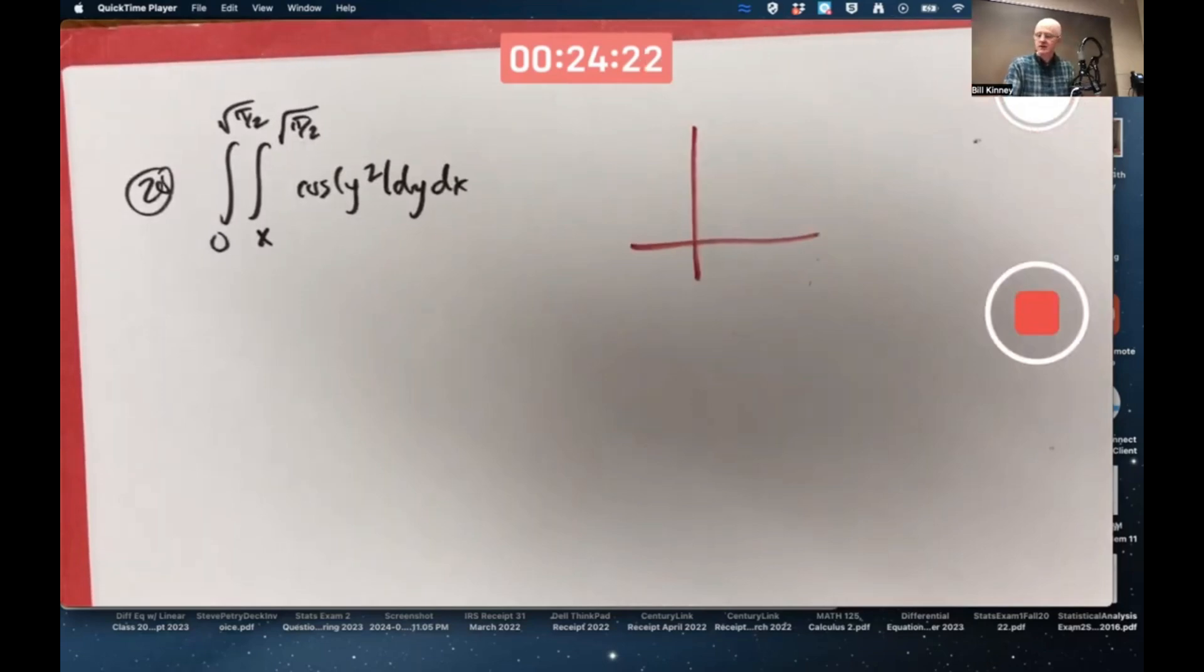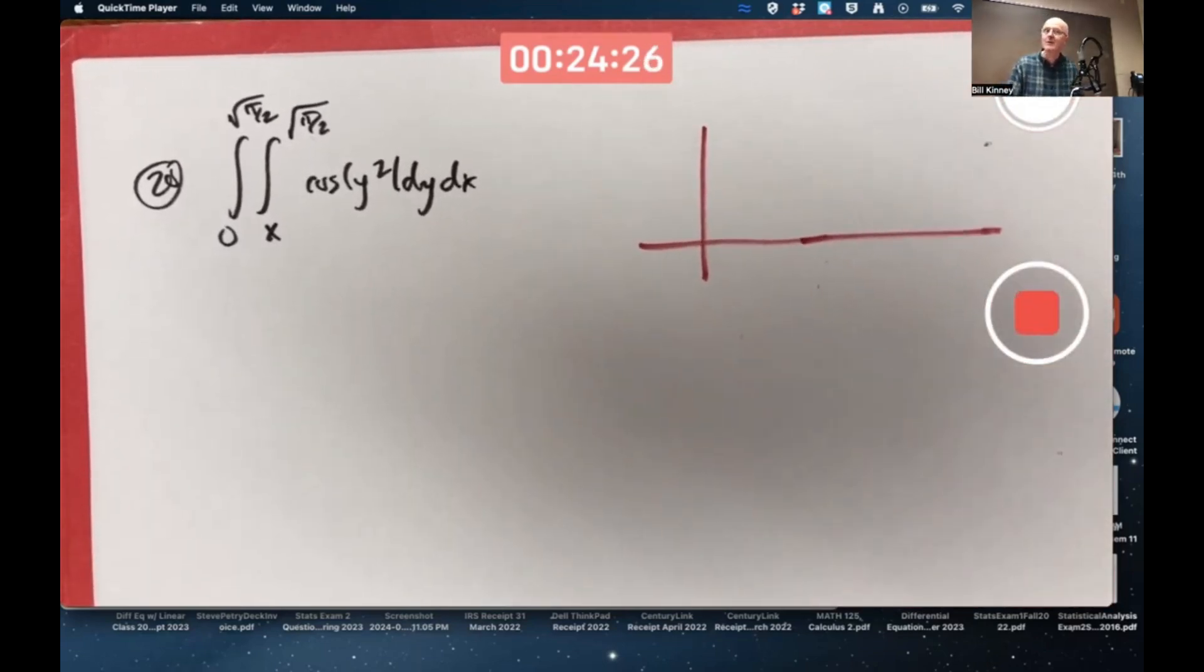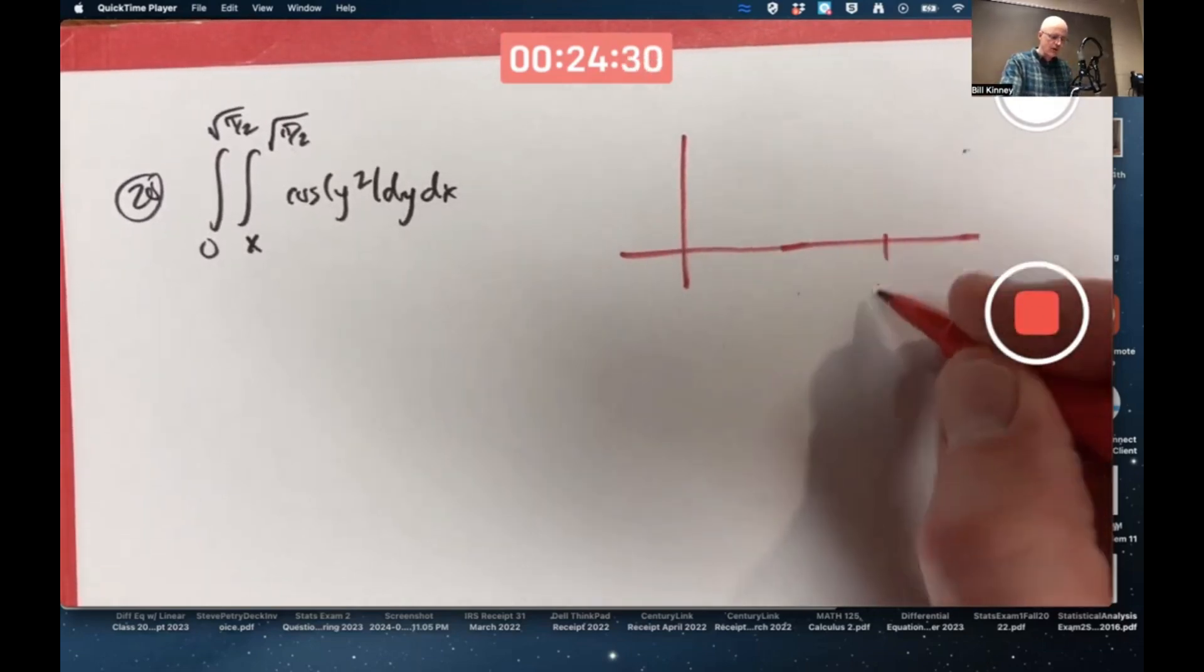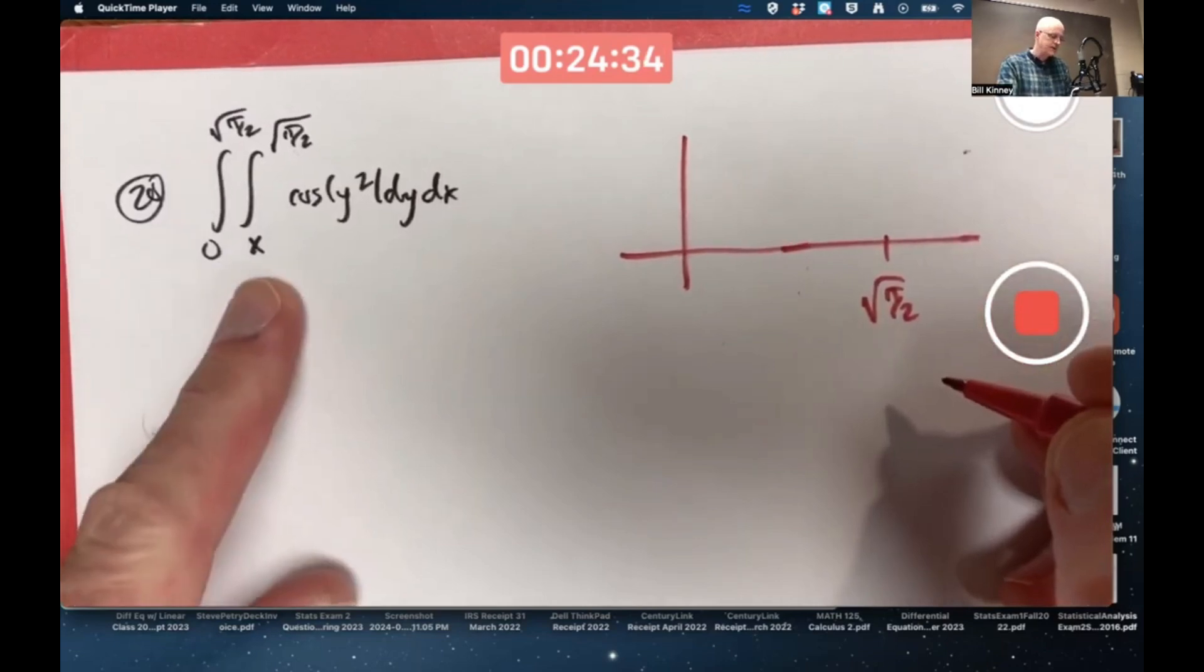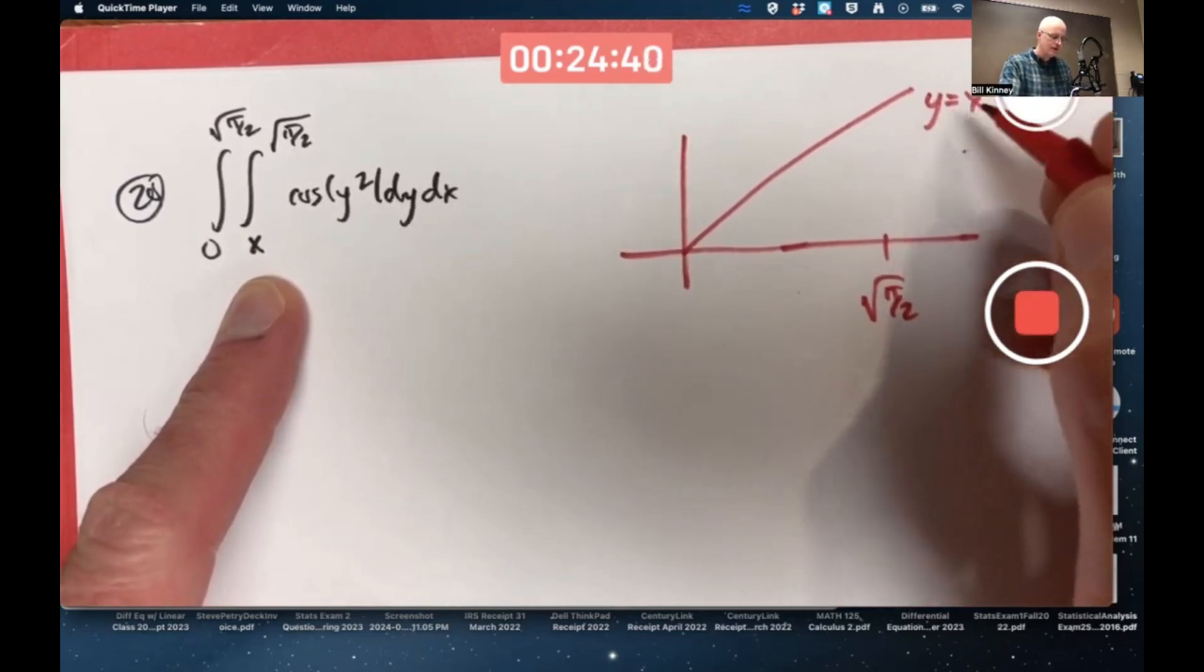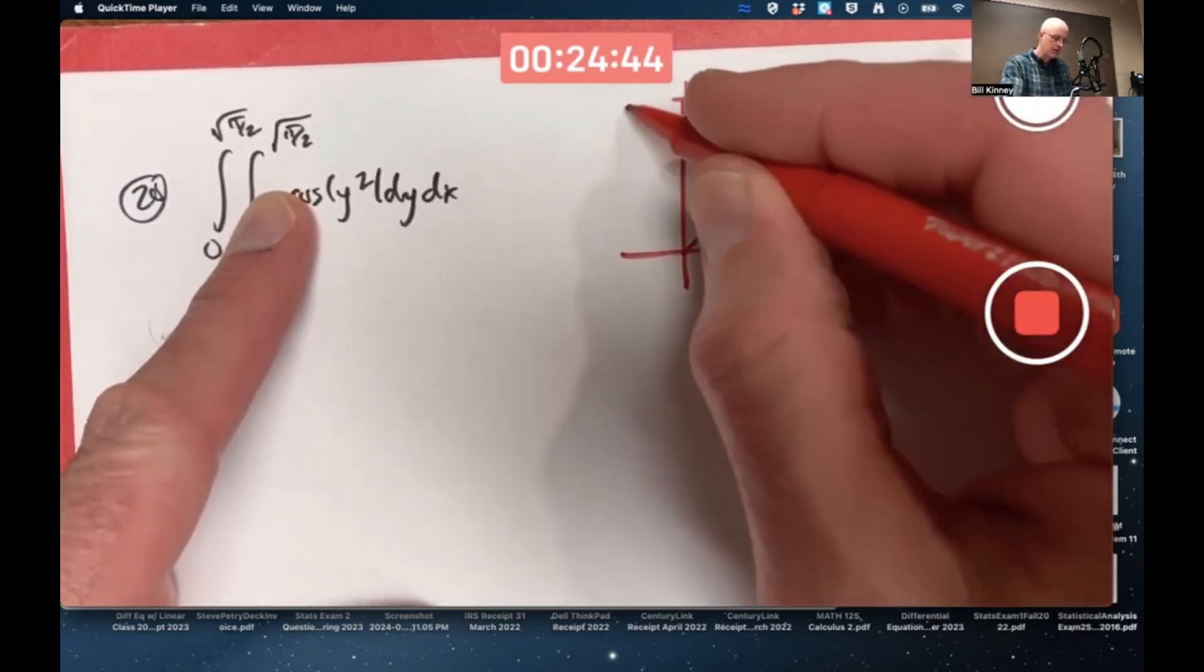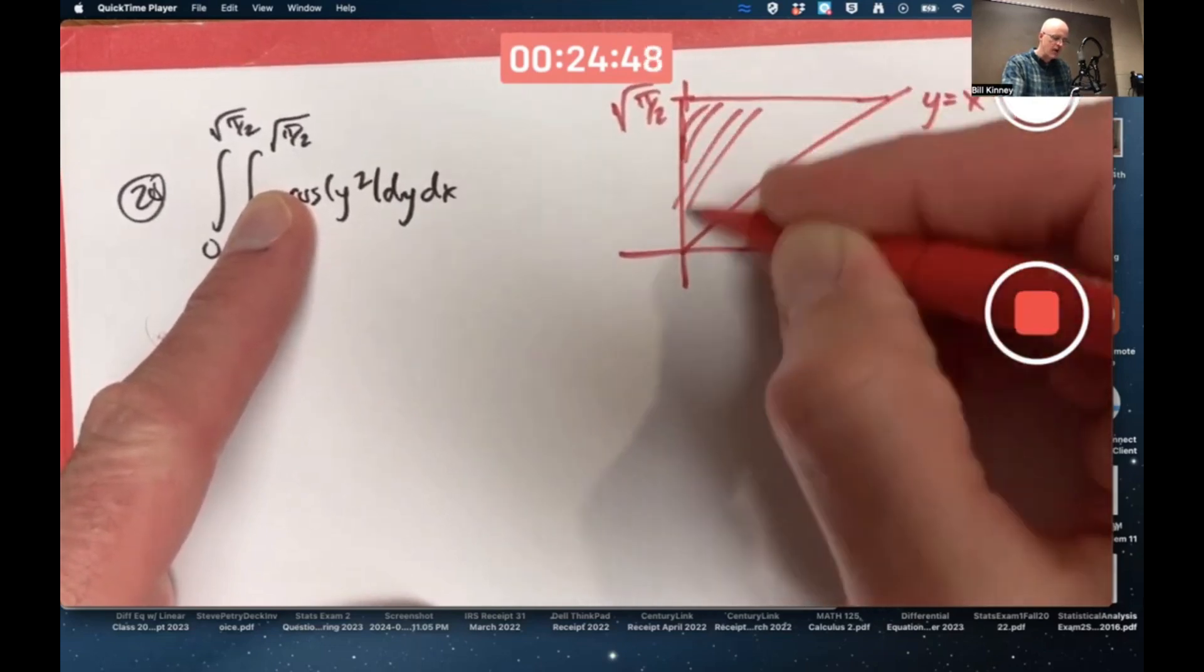But to do that, you got to draw an accurate picture. They don't tell you that, but that's what you got to do. X goes from zero to square root of pi over two. Y goes from a lower bound of x to an upper bound that's a constant, square root of pi over two.